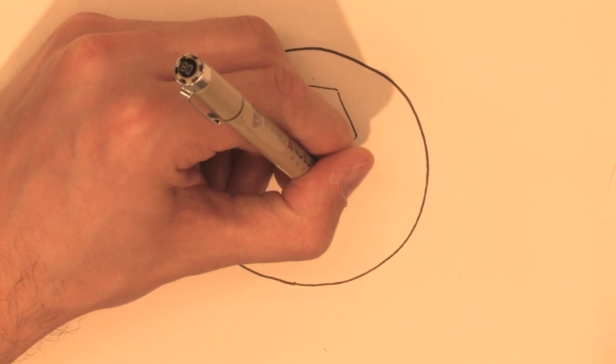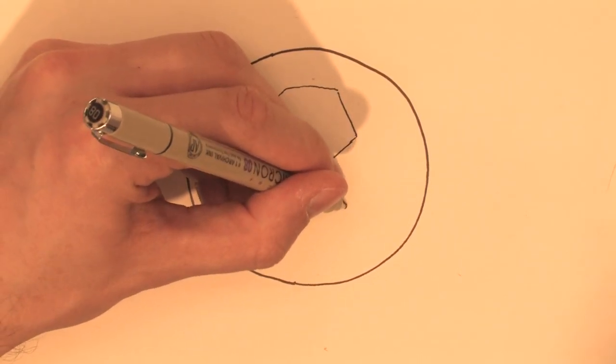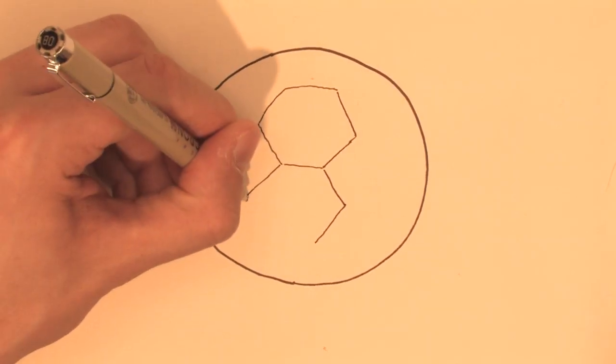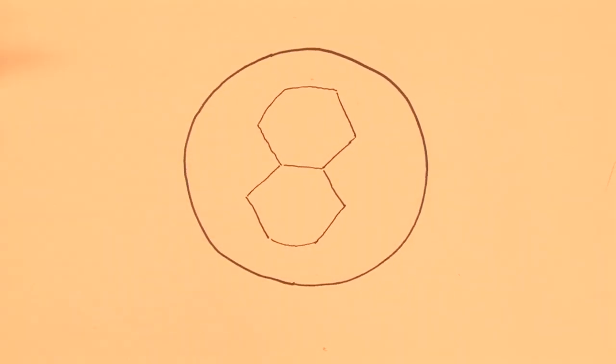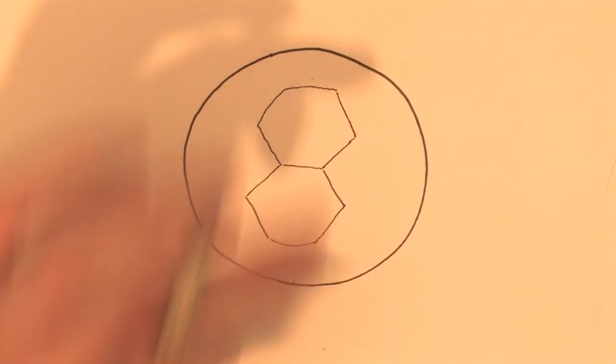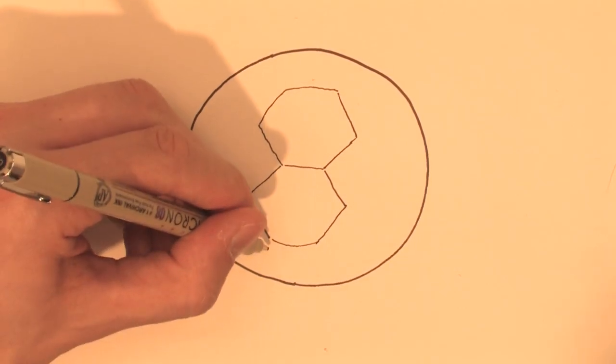Now where it gets tricky is as you work your way around the ball, the hexagons don't line up exactly the same way. These are a starting point, but as you work your way around,